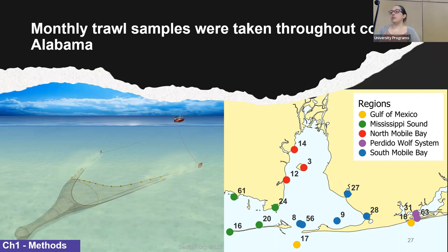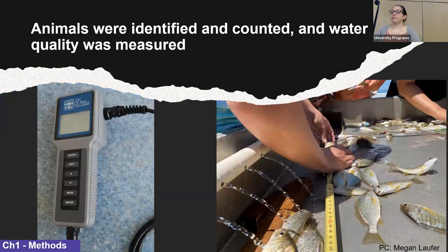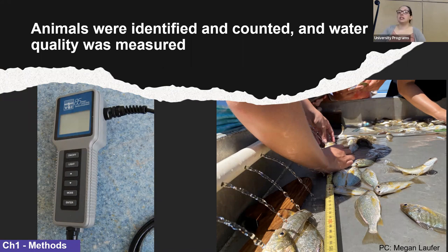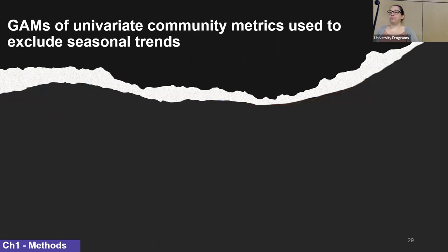The FAMP MRD program has taken monthly trawl samples throughout coastal Alabama since 1981. They use a 16-foot otter trawl fished for 10 minutes while the boat drives between two and two and a half knots, at the same locations since 1981. For each trawl, all animals were identified to the lowest taxonomic level possible, counted and measured, and a YSI water quality sonde was used at each station to measure salinity, temperature, and dissolved oxygen.